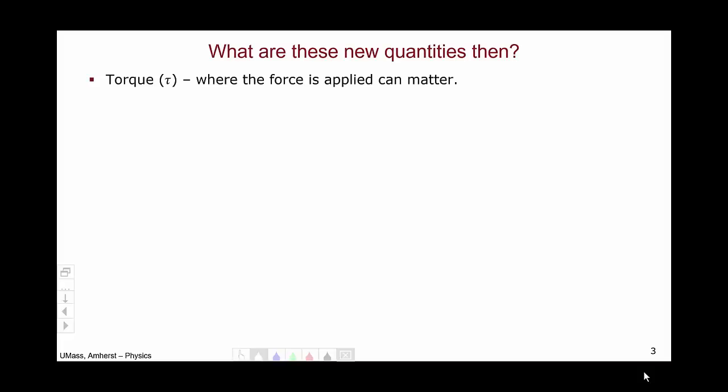The first unit we will discuss is torque, and this is the fact that where forces are applied can matter. So this goes back to the door, applying a force near the hinge results in a different experience than applying a force far away from the hinge at the knob. The next quantity is impulse, how long we apply a force also matters. This is the ball example from the previous slide.